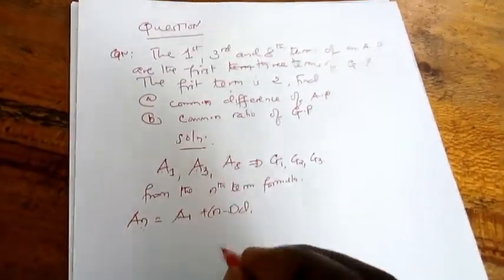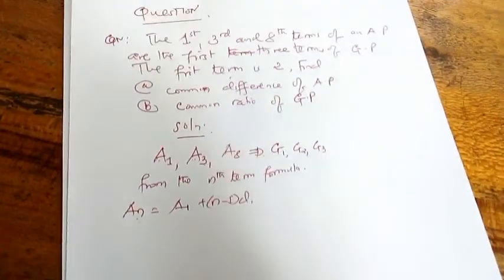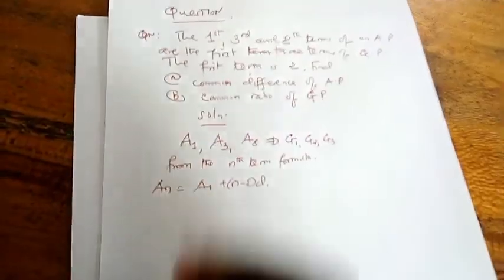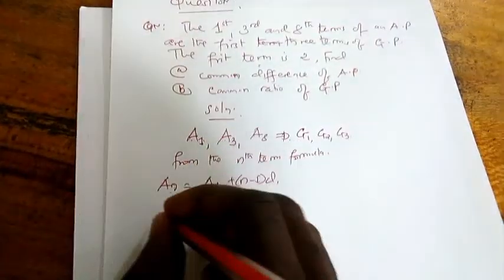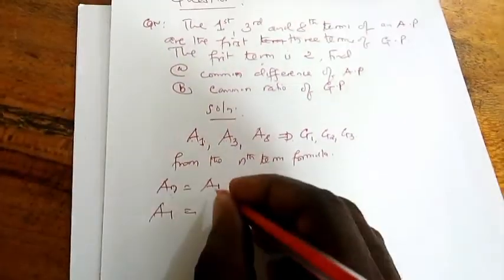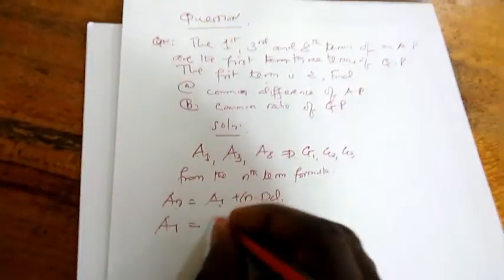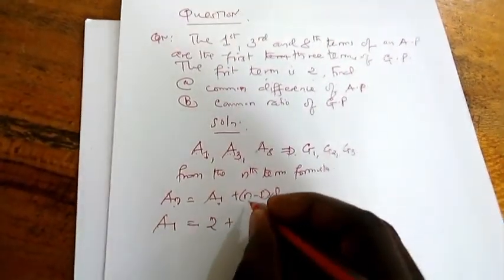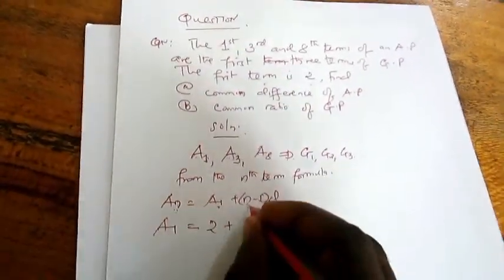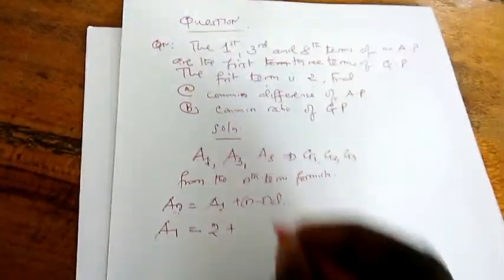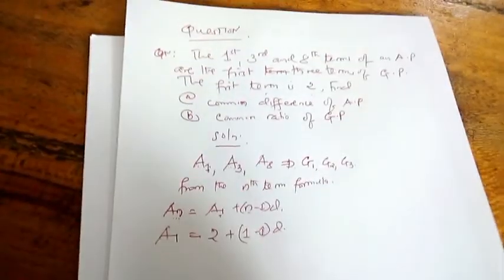But he told us that these first, third, and eighth terms form the first three terms of geometric progression, which become G1, G2, and G3. After that, you write: from the nth term formula. The nth term formula says that AN equals A1 plus n minus 1 times D. This is the general formula for nth term. We use the nth term formula because he gave us first, third, and eighth terms.